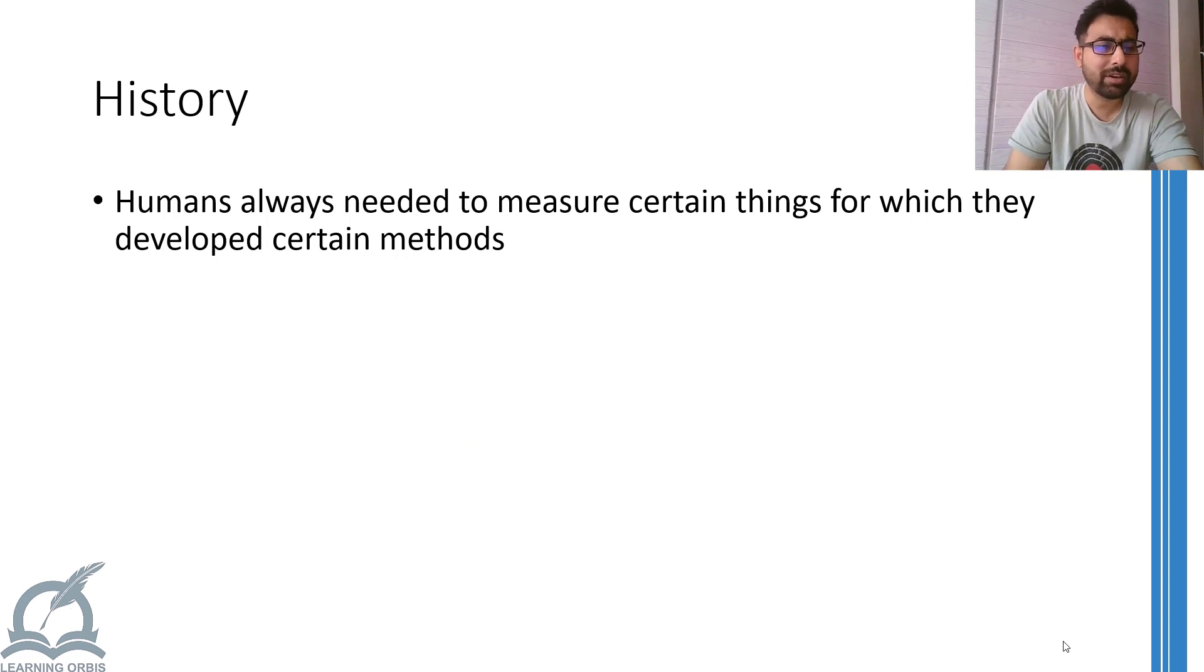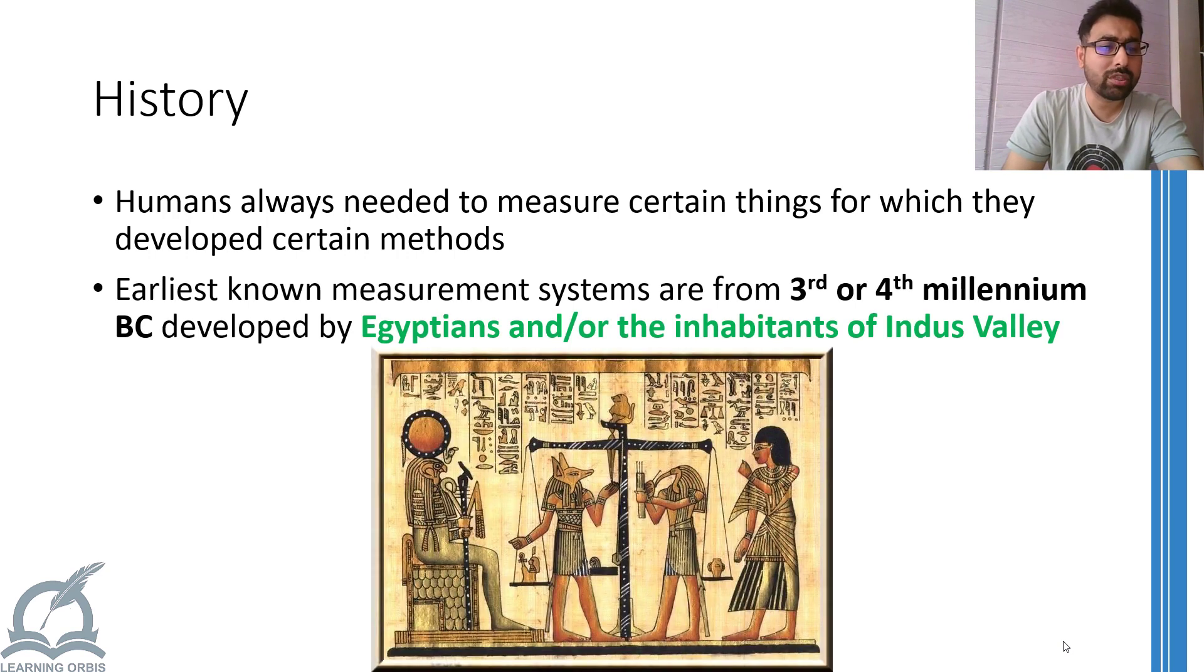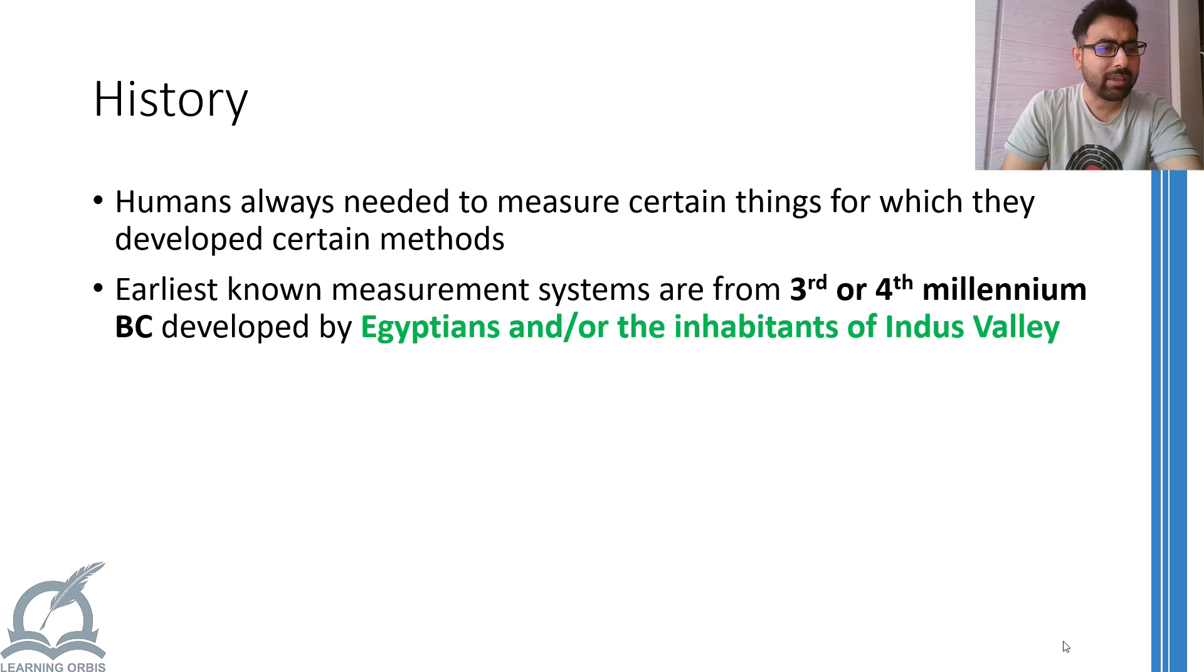However, the oldest known measurement systems which archaeologists have discovered are from 3rd or 4th millennium BC, that is around 4,000 to 5,000 years ago. These systems are mostly from Egyptians or the inhabitants of Indus Valley. This establishes that people living in these regions were already using measurement systems, no matter what form of the systems were being used.